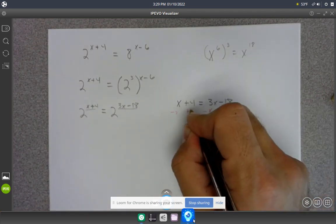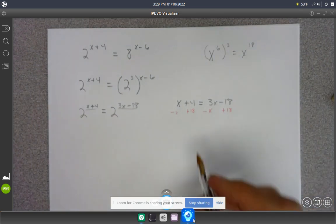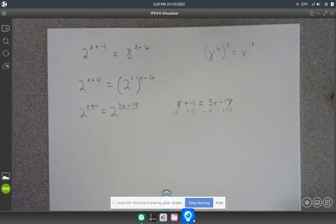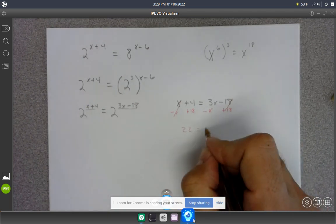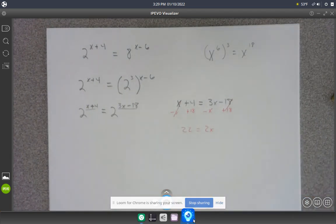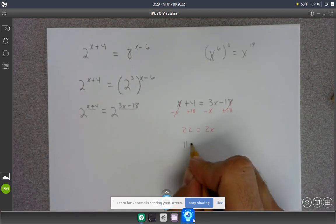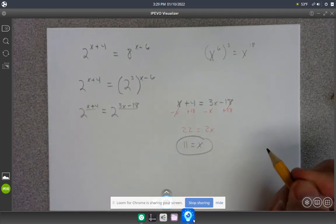Then move our regular numbers to the other. Add 18 to both sides. Cancels, cancels. You get 22 on the left-hand side and 2x on the right-hand side. So 11 is equal to x.